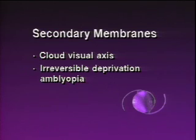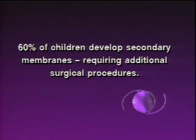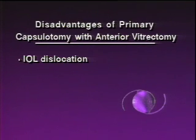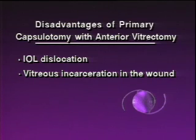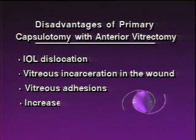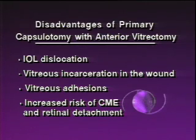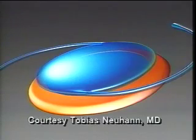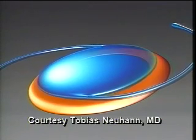Secondary membranes are commonly formed which cloud the visual axis and can lead to irreversible deprivation amblyopia. Studies have found that even after primary posterior capsulotomy, over 60% of the children developed secondary membranes which required additional surgical procedures. A disadvantage of primary capsulotomy with anterior vitrectomy is the possibility of IOL dislocation, vitreous incarceration in the wound, and vitreous adhesions which increase the risk of CME and retinal detachment. Even after primary posterior capsulectomy with vitrectomy, many children's visual axes still become reoccluded by secondary membranes, necessitating repeated capsulotomies and sometimes pars plana membranectomy.